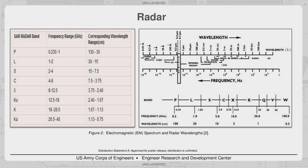The term radar was coined in 1940 by the United States Navy as an acronym for radio detection and ranging. Radio wavelengths are the longest wavelengths in the electromagnetic spectrum past infrared. Radar frequencies range from about 0.23 gigahertz to about 40 gigahertz and are divided into various bands. Some of the more common radar bands for military purposes include C, X, and KU bands.